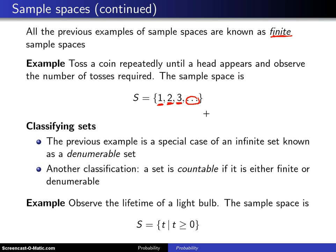When we classify sets, the example we just went over of tossing a coin until a head appears is a special case of an infinite set that is known as a denumerable set. And sometimes the number of outcomes in that set is known as a countable infinity.